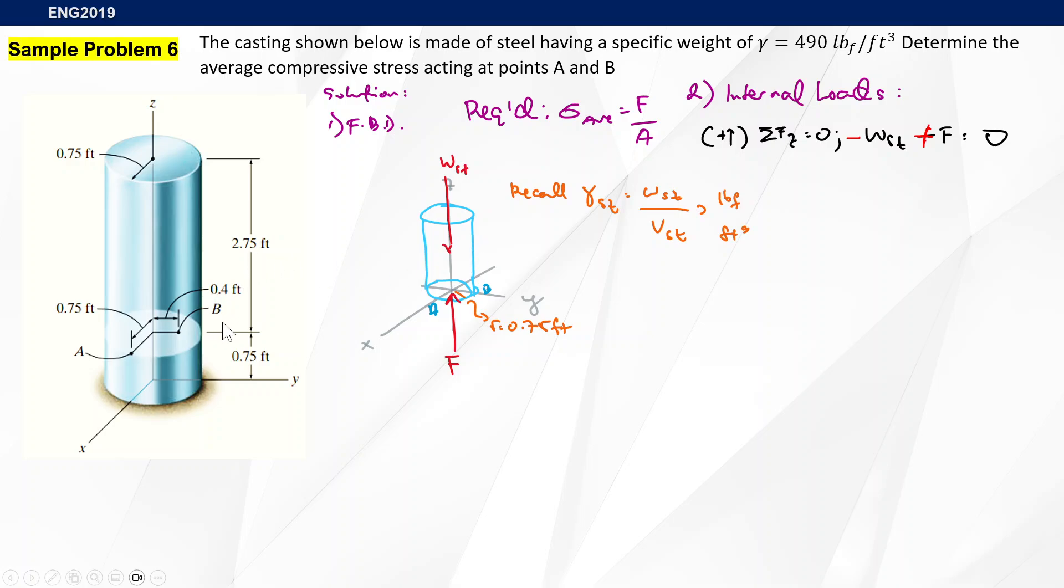Volume of steel is simply the volume of this particular cylinder. If you know your geometry, that's area of the base times height, so that's pi r squared times 2.75, which is pi times 0.75 squared times 2.75. Our F here is also equal to WST, which equals specific weight of steel times volume of steel. That's 490 pound force per cubic foot times pi times 0.75 squared feet squared times 2.75 feet. This will be cubic feet, this will cancel out, and give us a force of 2381.229 pound force.